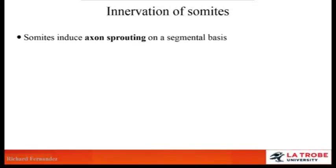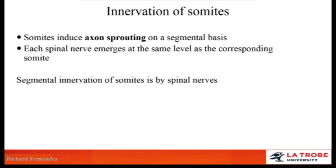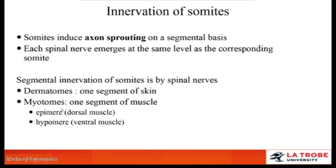When we consider innervation of somites, we need to realise that axons sprout out on a segmental basis, meaning each spinal nerve that emerges at the same level as each somite supplies the corresponding spinal segment of muscle and skin. The dermatome is one segment of skin and the myotome is one segment of muscle. The dorsal muscle mass — the epimere — is supplied by the dorsal ramus, and the ventral muscle mass — the hypomere — is supplied by the ventral ramus.